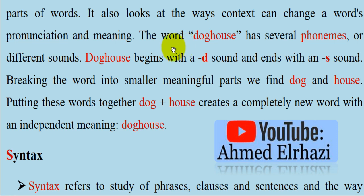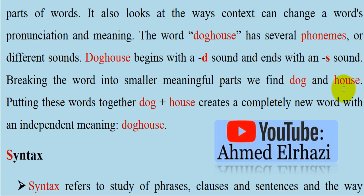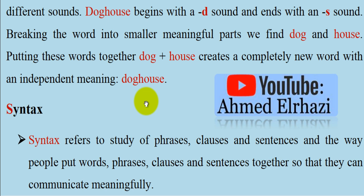For example, the word 'doghouse' has several phonemes — different sounds. It begins with a D sound and ends with an S sound. Breaking the word into smaller meaningful parts, we find 'dog' and 'house'.